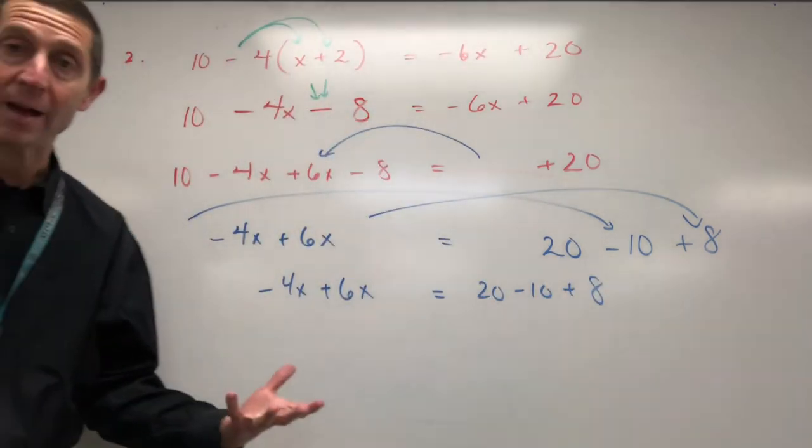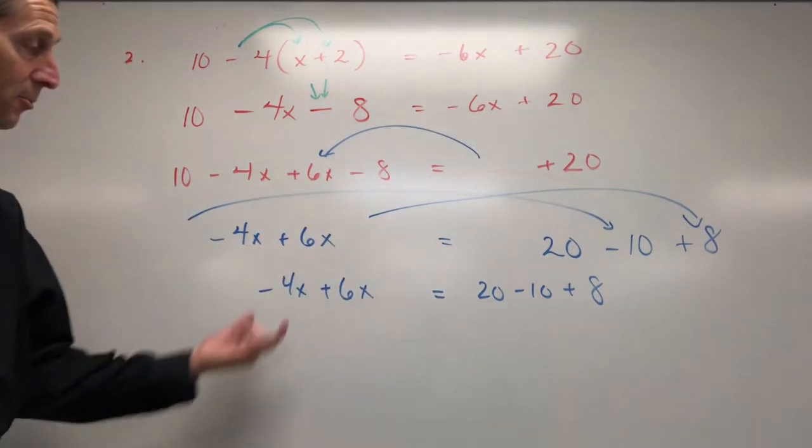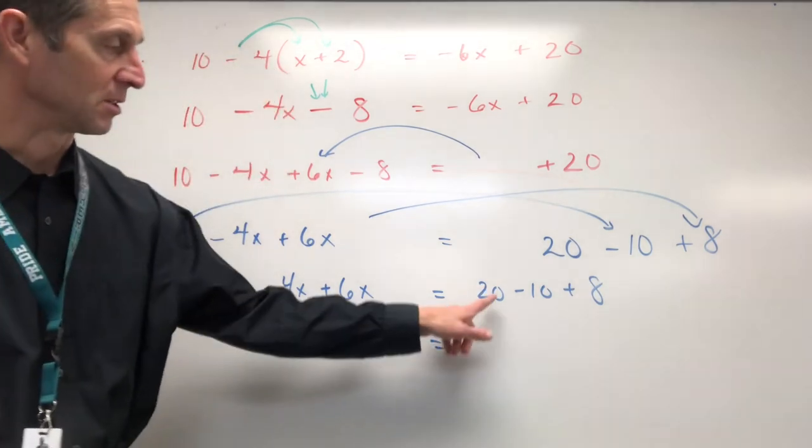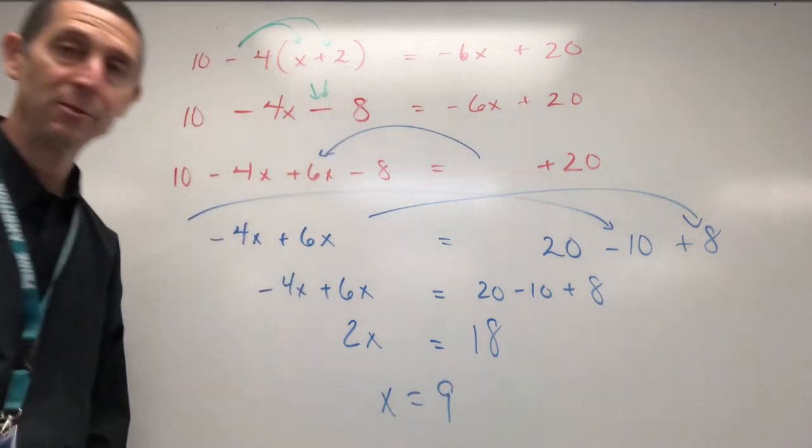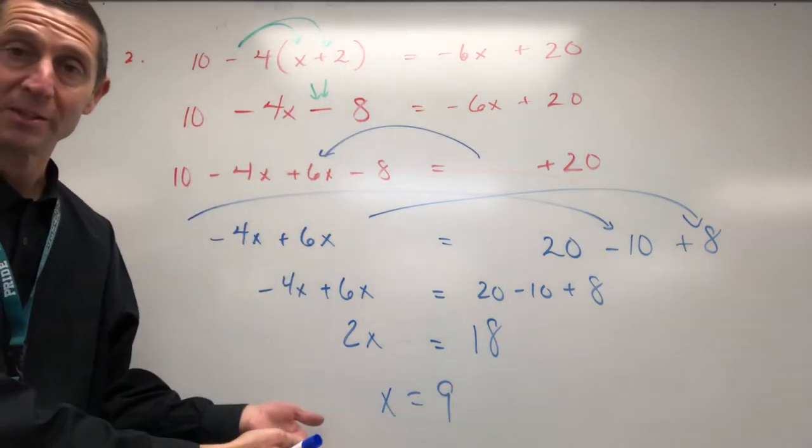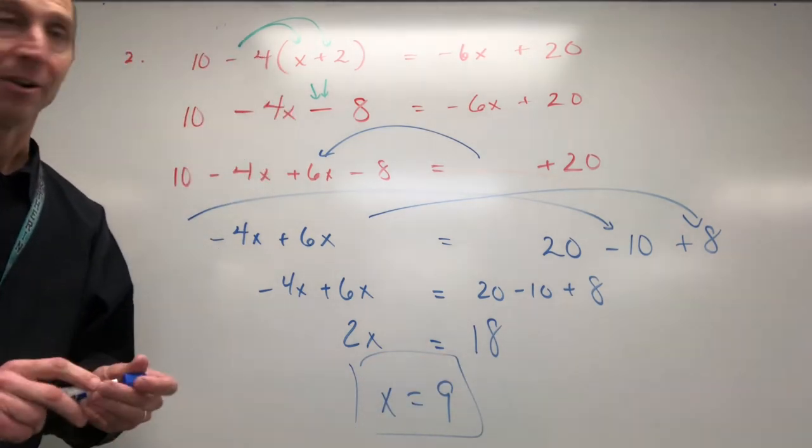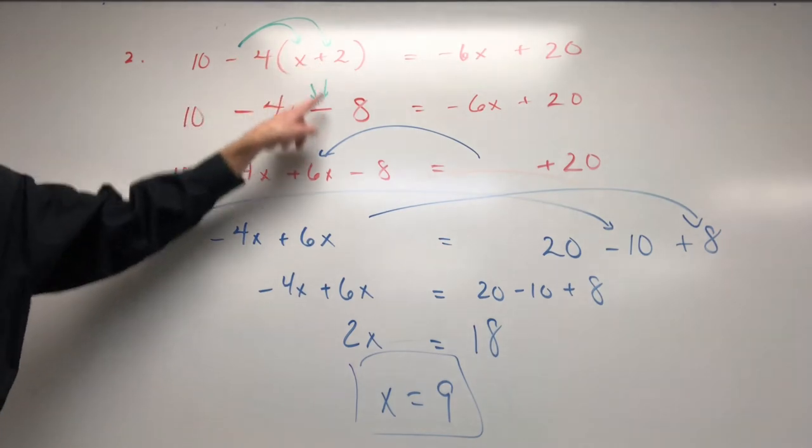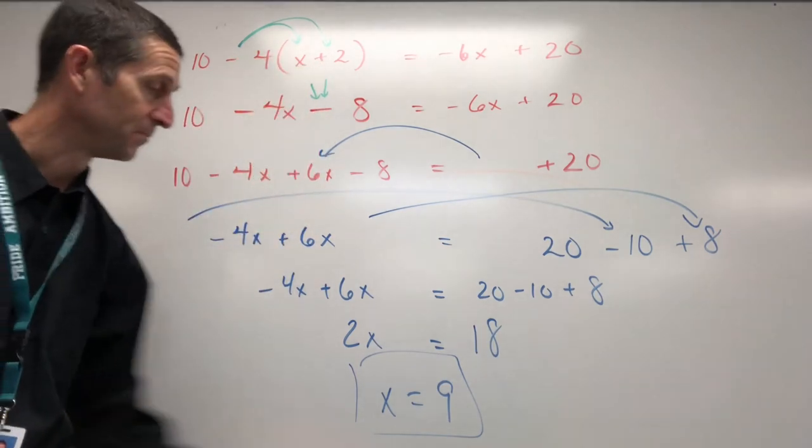So however you go about it, whatever moves you make, whatever road you went down, it's all going to lead the same way. This becomes a 2x. This is what—is this 20 minus 10 is 10, 10 plus 8 is 18. And so however you travel, you end up at the same destination: x equals 9. Alright, real quick trick again. Make sure you see the negative times positive, change that sign. So instead of positive 8, negative 8.